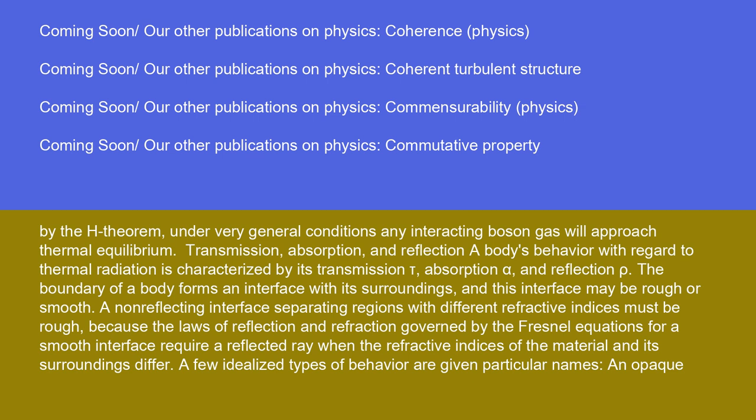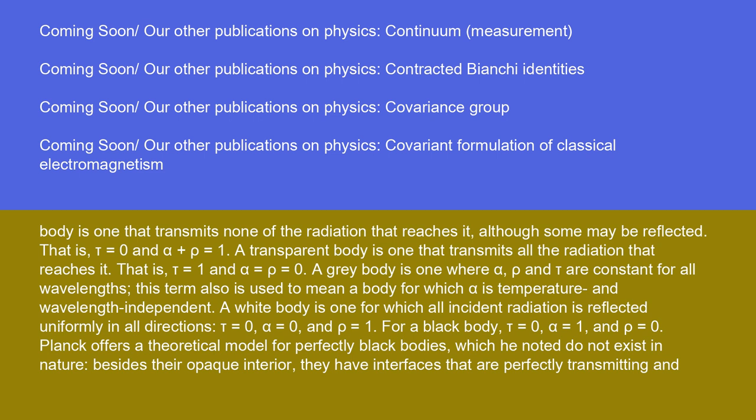A few idealized types of behavior are given particular names. An opaque body transmits none of the radiation that reaches it, although some may be reflected; that is, tau equals zero and alpha plus rho equals one. A transparent body transmits all the radiation that reaches it; that is, tau equals one and alpha equals rho equals zero. A gray body is one where alpha, rho, and tau are constant for all wavelengths — this term also means a body for which alpha is temperature and wavelength independent. A white body is one for which all incident radiation is reflected uniformly in all directions: tau equals zero, alpha equals zero, and rho equals one.